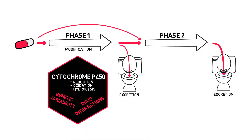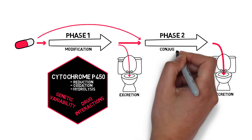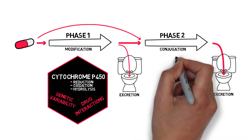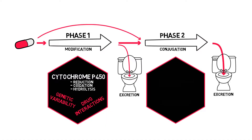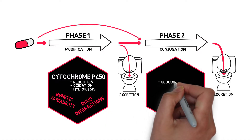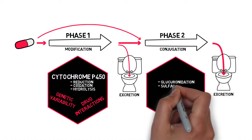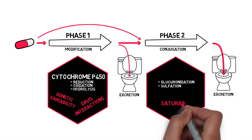Phase 2 consists of conjugation reactions, making the drug more water-soluble so that it can be excreted. Phase 2 reactions can be saturated, which is an important concept in toxicokinetics.